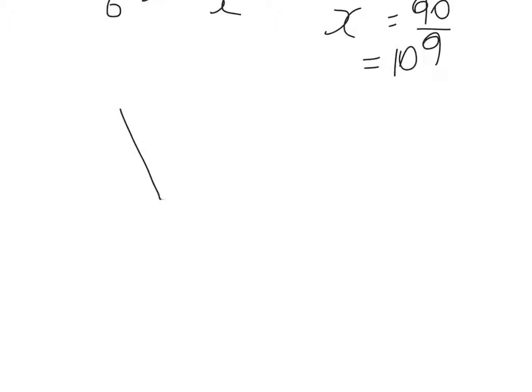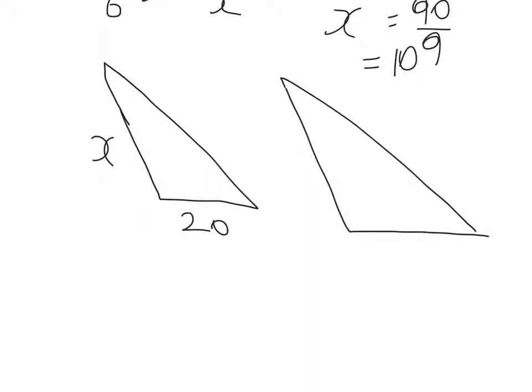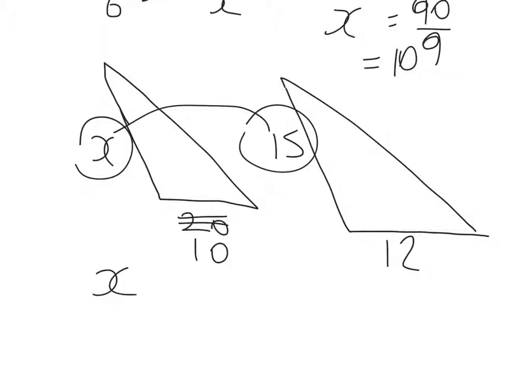Let's try another one. This time I've got a triangle with x and 20, and a similar but bigger triangle which is 15 and 12. So the ratio of the sides will be the same. So x to 15, x over 15 will have the same value as the ratio of those as 10 to 12.